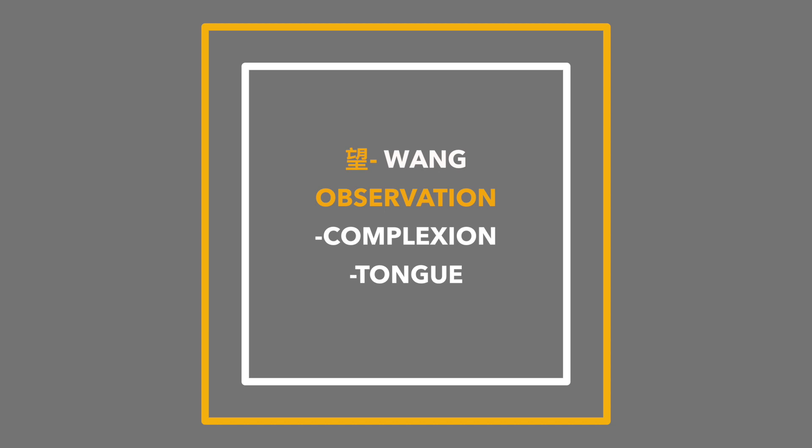The second thing we look at with complexion is the tongue — the tongue size, the tongue coating, any little red spots on the tongue, and any scalloping on the side of the tongue.